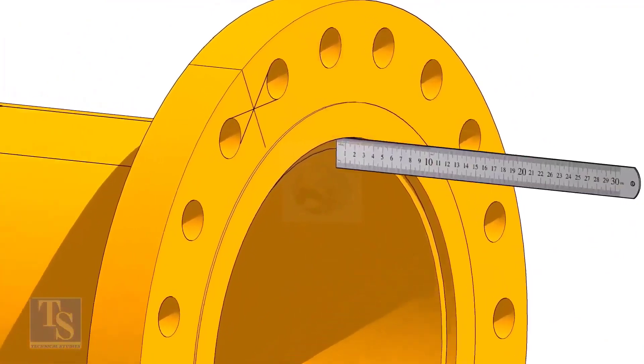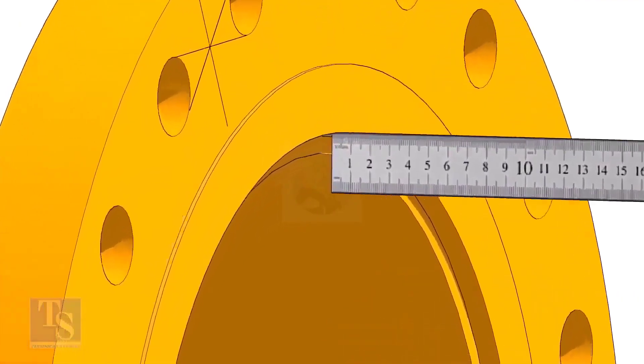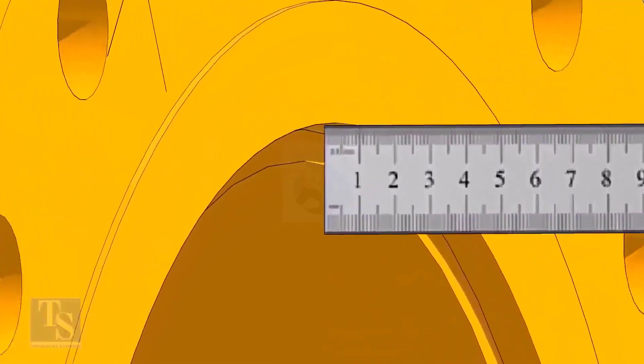Fix the distance between the flange face and the pipe face. Usually, this measurement is equal to the thickness of the pipe.